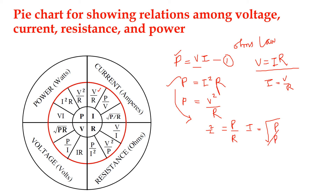Next, consider voltage. V is equal to IR. From the equation of power, V is equal to P by I. And from P = V²/R, we get V squared equal to PR, so V is equal to the square root of PR. In this way we can relate voltage and power.